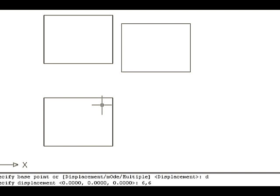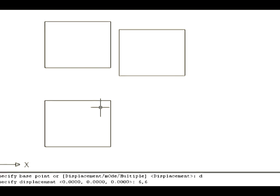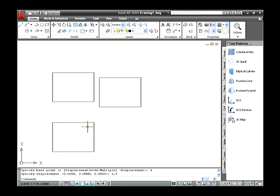Let's see the third option in the Copy command, which is called Mode. This option is newly added in this version. The Mode option controls whether the Copy command repeats automatically to create many duplicate objects. There are two sub-options: Single, which creates a single duplicate copy and exits the command; and Multiple, which creates many duplicate copies of objects.